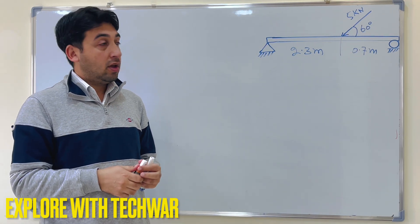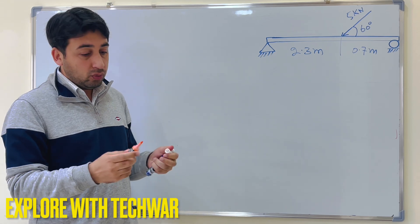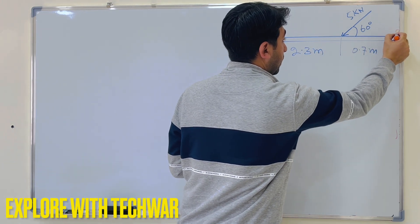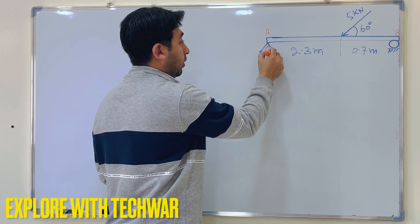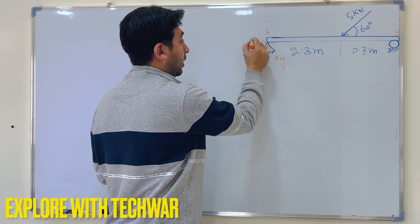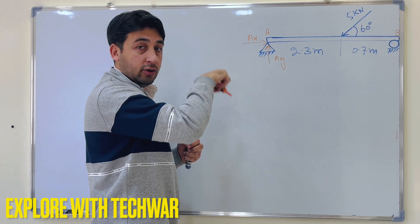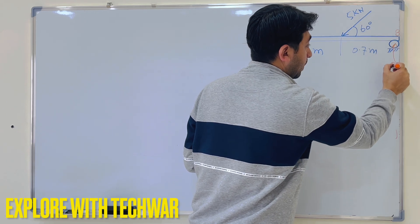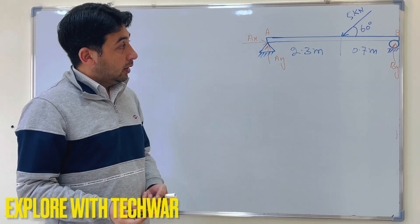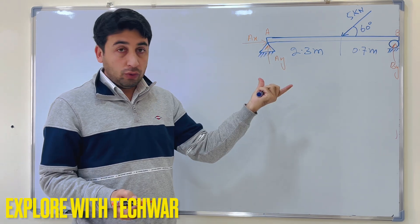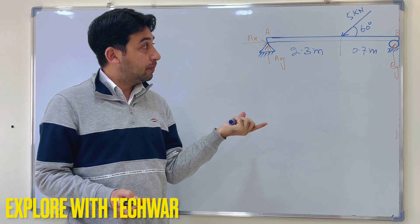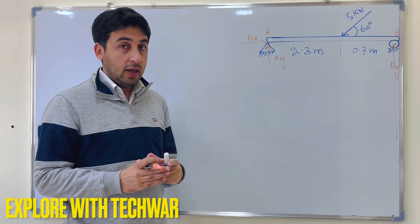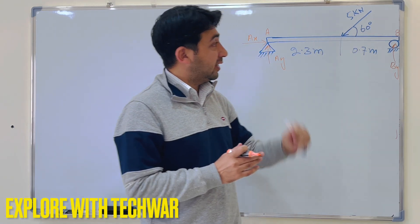To solve this type of problem we need to find the reactions. Let's say point A is the pin support on the left and point B is the roller on the right. At A we have Ay acting upward and Ax acting to the right. At B we have By acting upward. The applied force is 5 kilonewtons at 60 degrees.